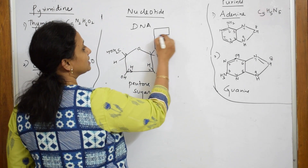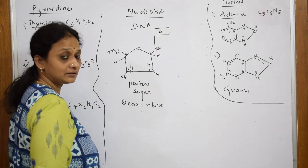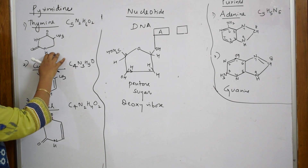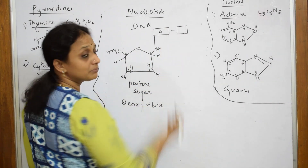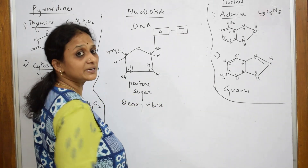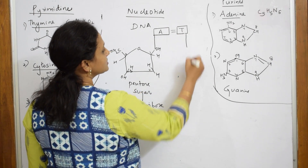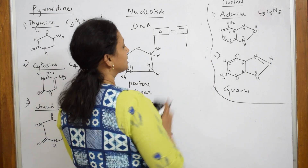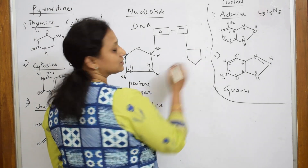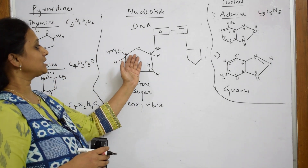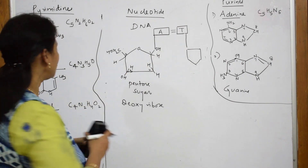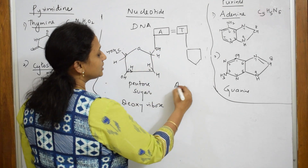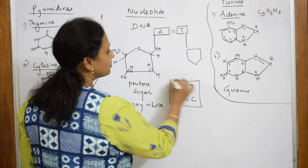Suppose if you have a purine here, in the next strand parallel to this you have — adenine always pairs with thymine. Adenine pairs with thymine by a double hydrogen bond. And then guanine links with cytosine. So the base pairs in DNA are: adenine links with thymine, and guanine links with cytosine. This is your combination in DNA.